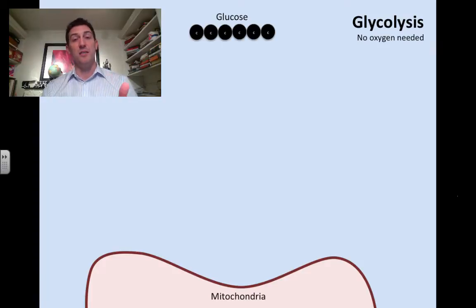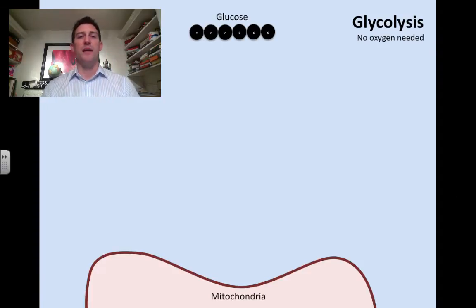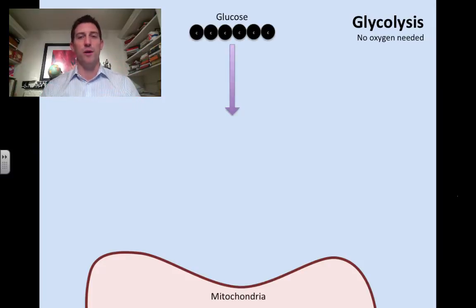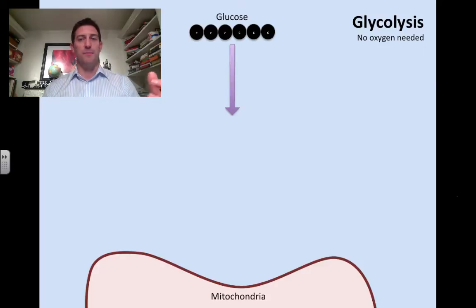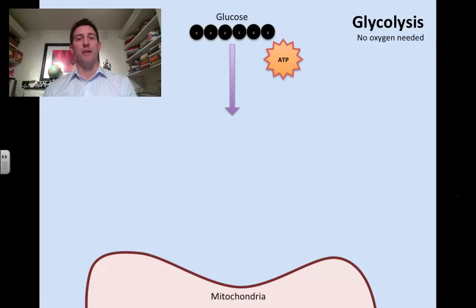Glucose is a six-carbon molecule — there are hydrogens and oxygens as well, it's C6H12O6 — but I'm just representing it as a six-carbon chain so we can track where these molecules are going and how they're breaking apart. Glucose is going to get broken down once it enters your body and gets inside your cell.